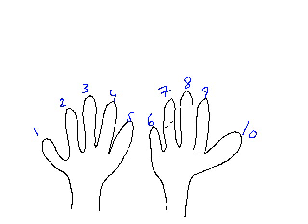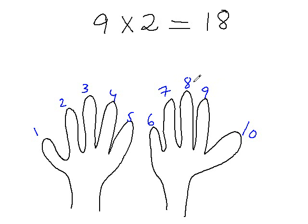So let's start with a very simple question: what is 9 times 2? We know that 9 times 2 is 18, so let's see how we can find that using this calculator of ours.